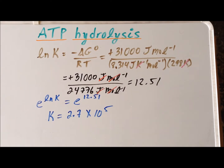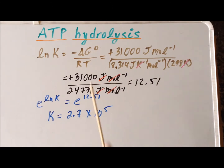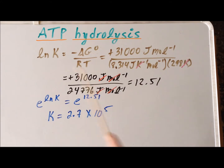This is exactly what we expect with the proper sign. Since the Gibbs free energy is a negative number, the reaction is favored, so we expect a predominance of products over reactants — and indeed the equilibrium constant is very large. If the Gibbs free energy were zero, we'd expect K equal to one; a positive standard Gibbs free energy would give K much smaller than one. The signs check with what we expect from thermodynamics.